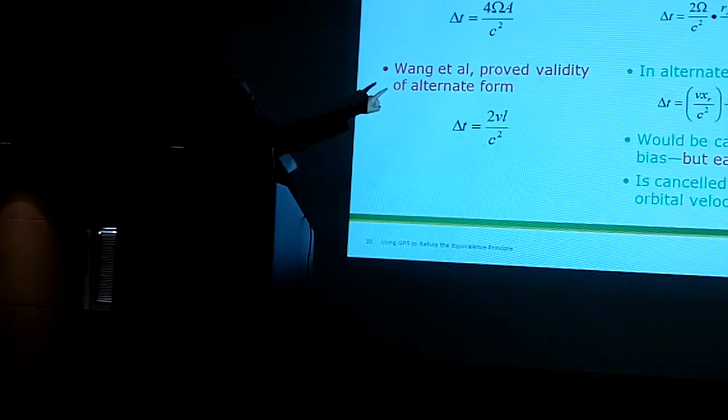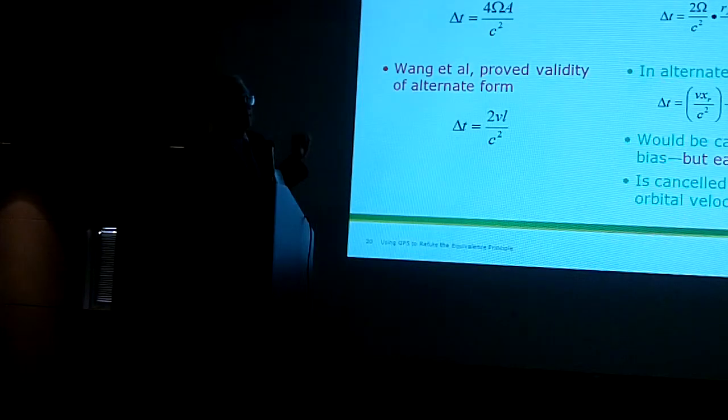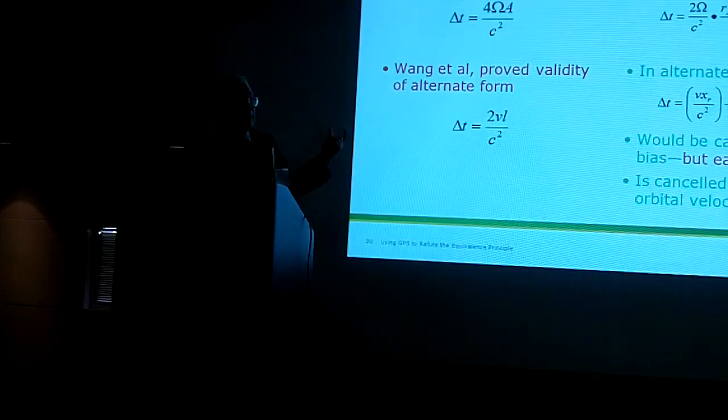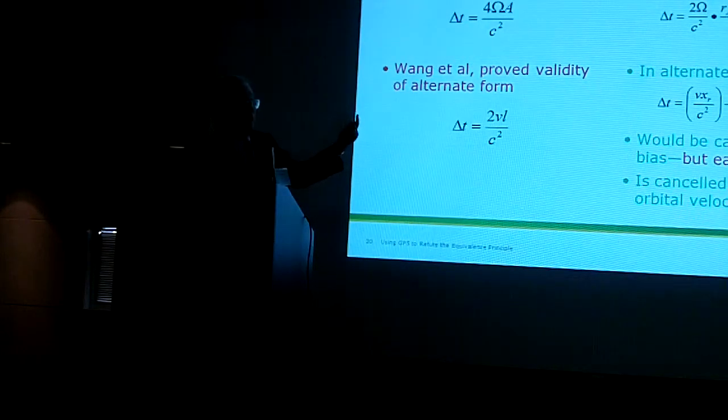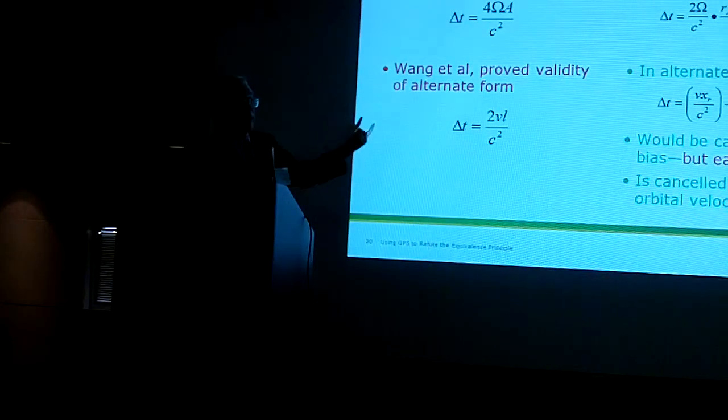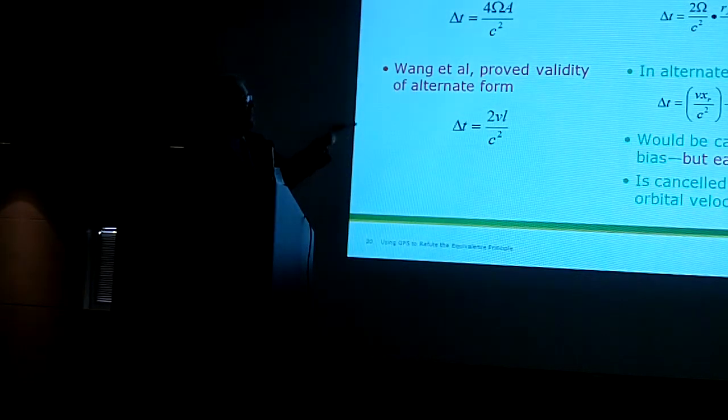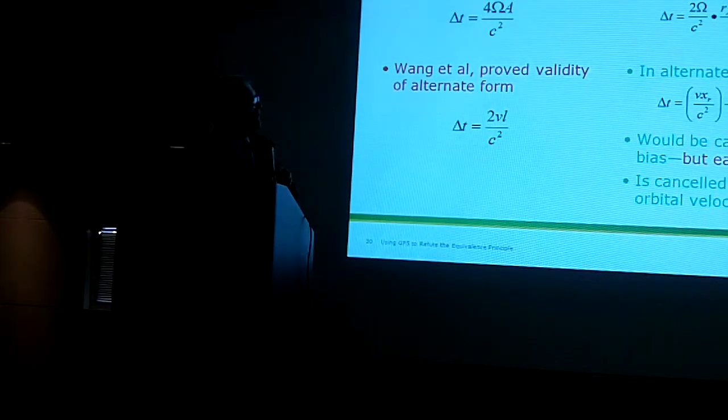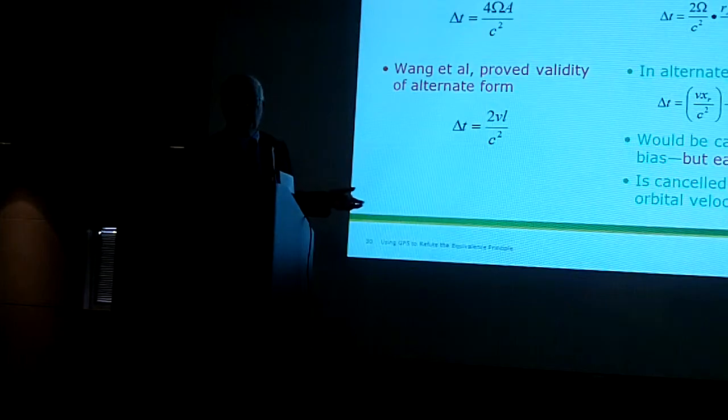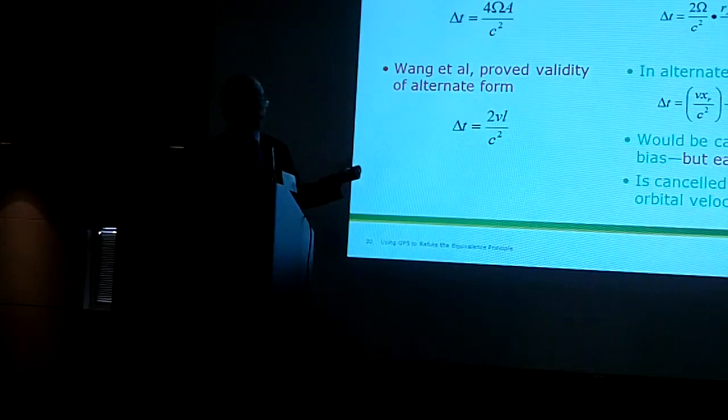I can take the GPS form and put it into a form where I call the velocity of the receiver times the receiver's position in the along-track velocity direction divided by C squared minus the velocity of the receiver again and the satellite position in the along-track velocity direction over C squared.